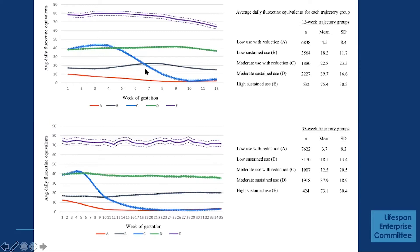There were five trajectories. Women who started at a low dose and discontinued or reduced further their exposure — these are average fluoxetine equivalents. We had a low sustaining group, a group that came in around 40 fluoxetine equivalents with one that discontinued and one that sustained, and then a higher sustaining group. Notably, when comparing the 12-week and 35-week models, there wasn't much movement after the first trimester — most of the change occurred in that initial first trimester.